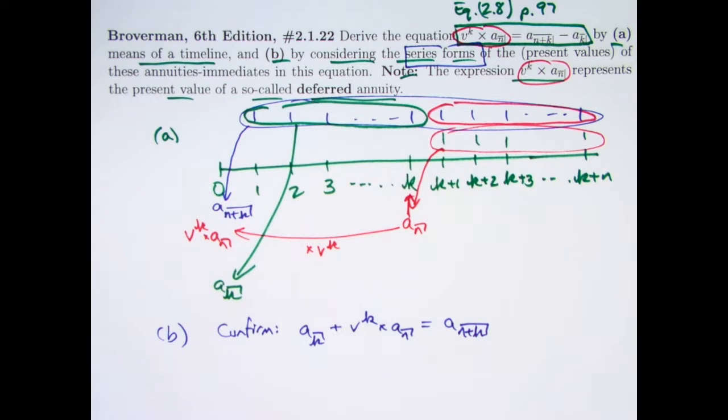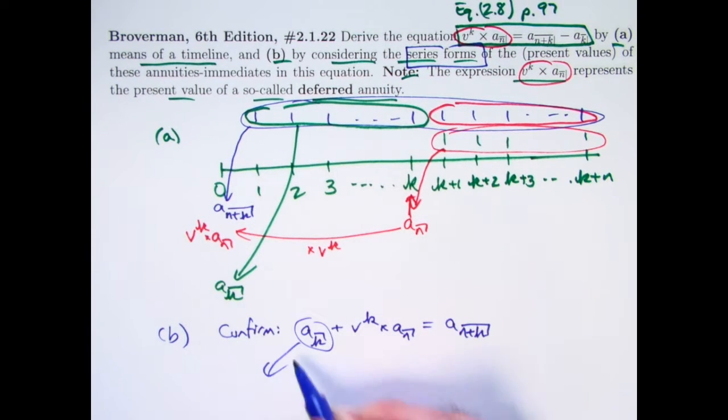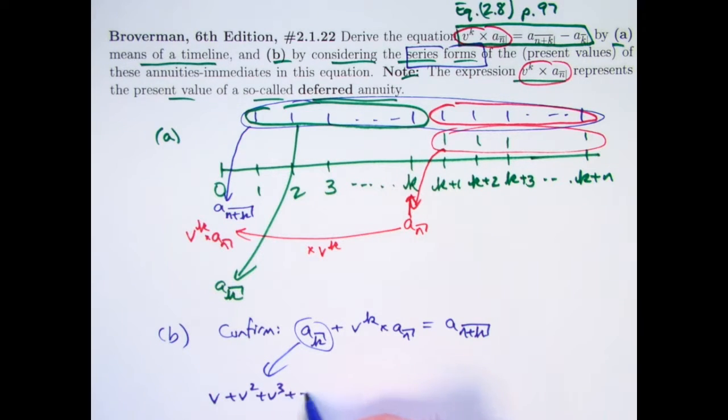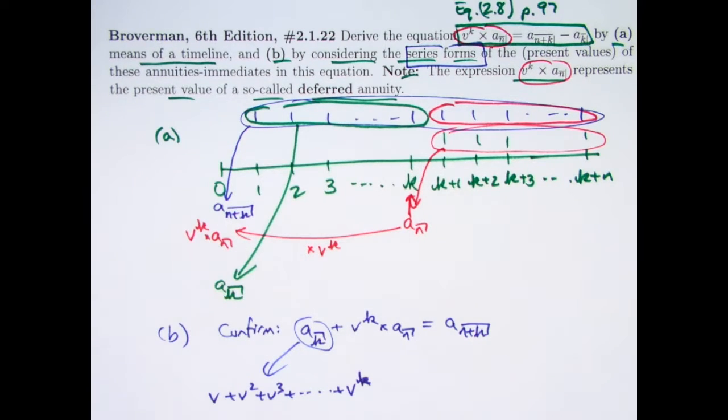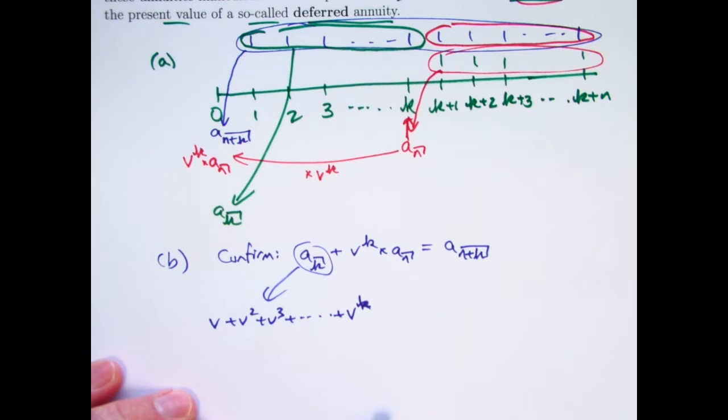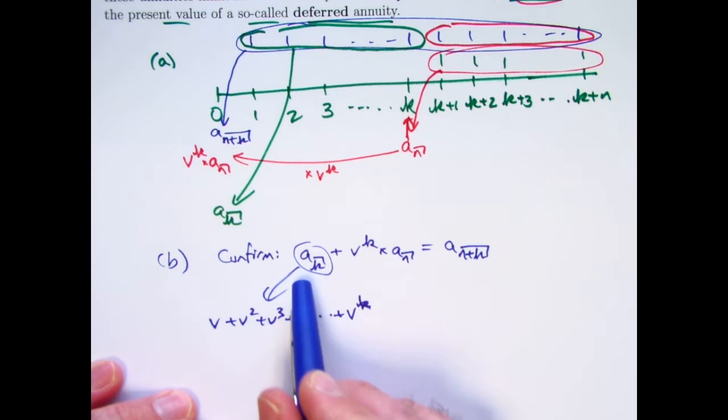Based on the algebraic definitions of these things, this by definition is V plus V squared plus V cubed, et cetera, plus V to the K where V is the present value discount factor. This is for annuity immediate. So the first payment is one year after the start.